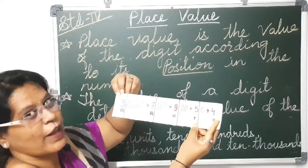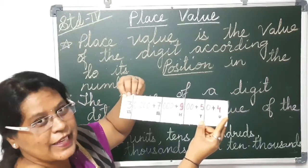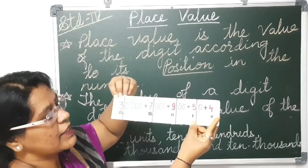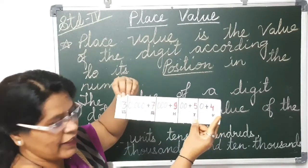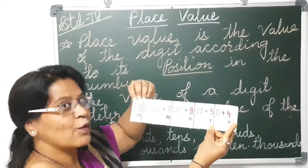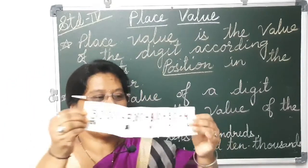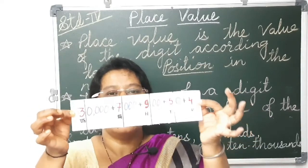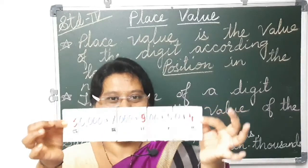The place values are: units place 4, tens place 50, hundreds place 900, thousands place 7,000, and 10,000 place 30,000. I hope that with these folding strips, your concept of expanded form and place values is clear.